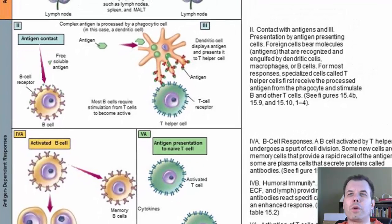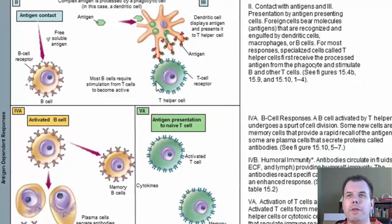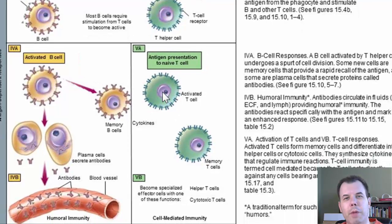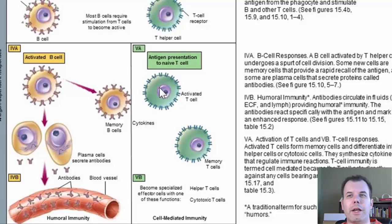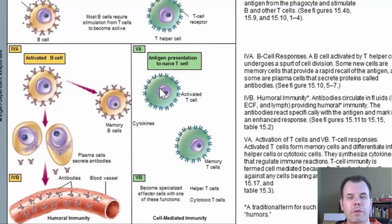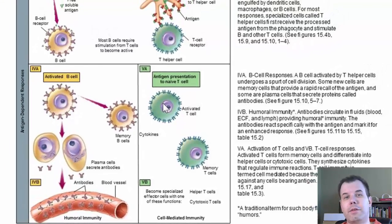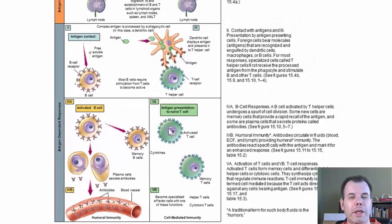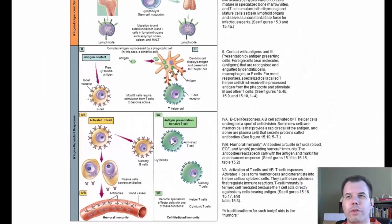T cells work similarly but must be presented to by macrophages. Once activated, they make activated T cells — some become memory cells, others become cytotoxic T cells that kill infected cells, and others become helper T cells that help the B cells respond. So there are two main types: helper T cells, which help present to B cells and other T cells, and cytotoxic T cells, which go in and kill cells.